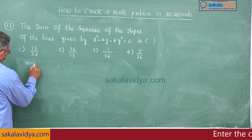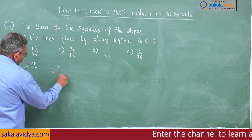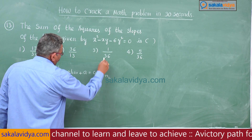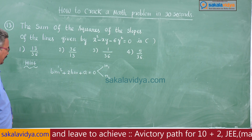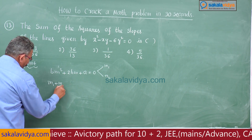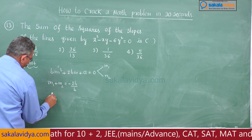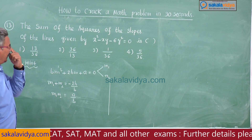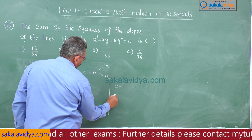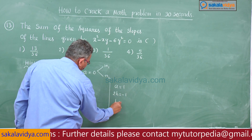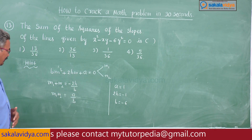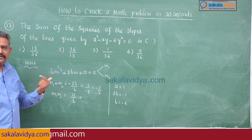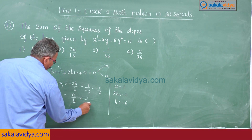The equation bm² + 2hm + a = 0 has two roots m₁ and m₂, where m₁ is the slope of the first line and m₂ is the slope of the second line. So m₁ + m₂ = -2h/b and m₁ × m₂ = a/b. For this problem, a = 1, 2h = -1, b = -6. So m₁ + m₂ = -(-1)/(-6) = -1/6, and m₁m₂ = 1/(-6) = -1/6.